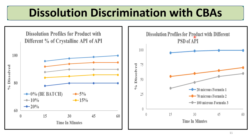Another example shows products with different particle sizes of API: 20 microns as the ideal or bio-batch, then 70 microns and 100 microns. The dissolution method gives clear discrimination between these particle sizes. These are examples of CMAs of the API — Critical Material Attributes — also called CBAs, Critical Bioavailability Attributes.